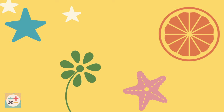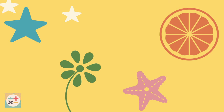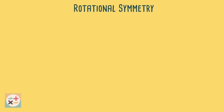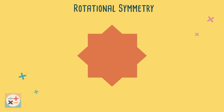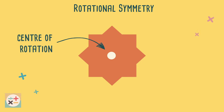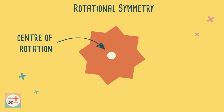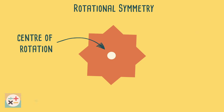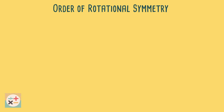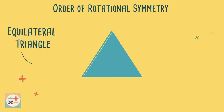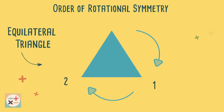Rotational symmetry can be seen a lot in nature. Rotational symmetry refers to the symmetry of a shape when it is rotated about its centre and whether or not it will look the same when rotated into different positions. The order of rotational symmetry is the number of times that a shape will look exactly the same when rotated through 360 degrees.